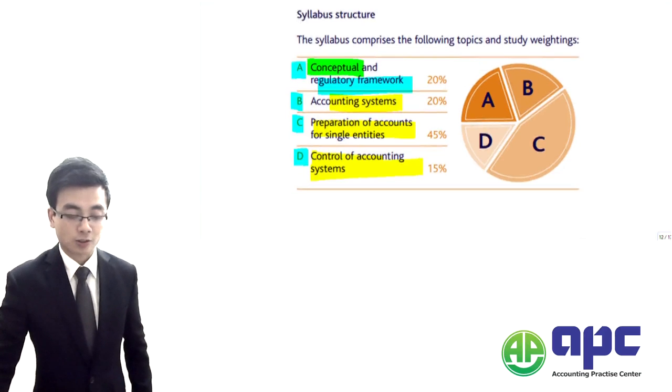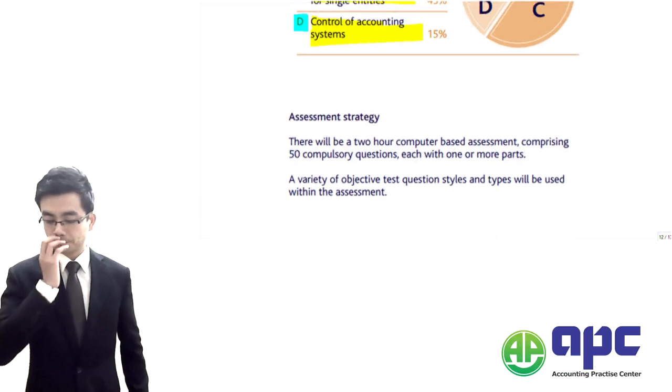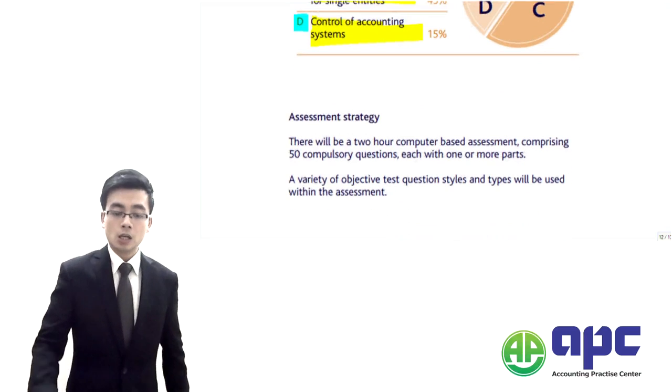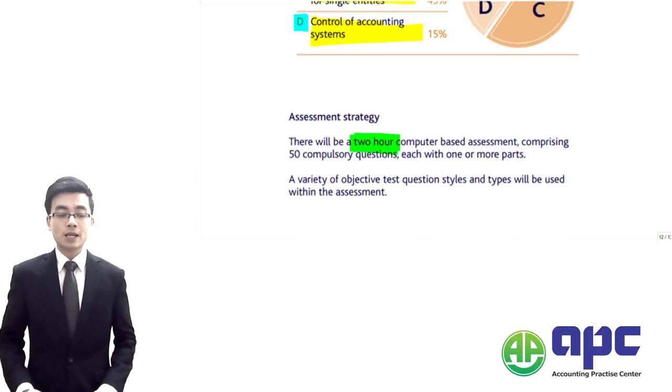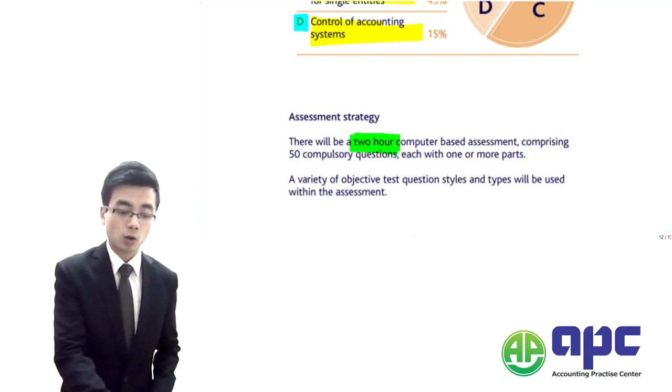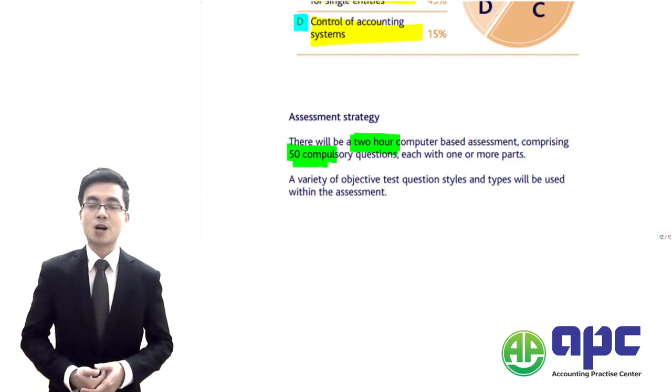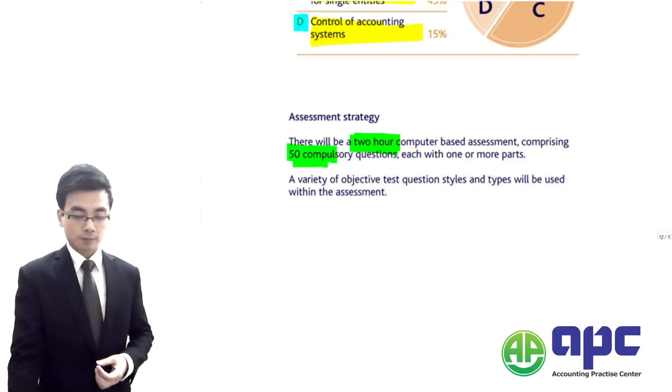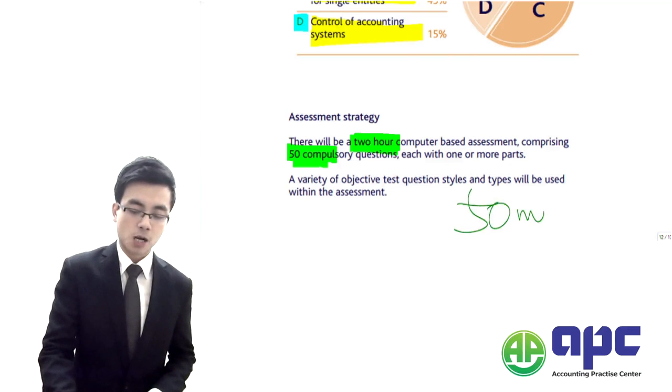The next part of this video, we're going to look at how CIMA CO2 may be assessed by your examiner. You're given two hours sitting in front of your computer, and you're given 50 compulsory questions, each of them worth two marks. The passing mark for CIMA CO2 is 50 marks.